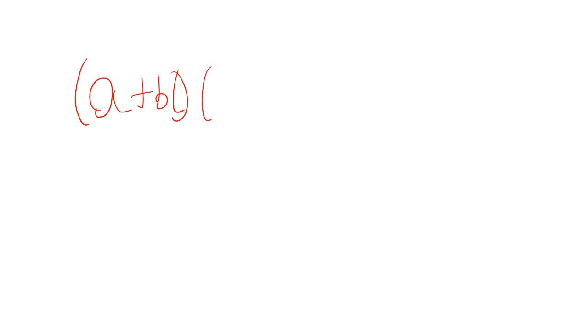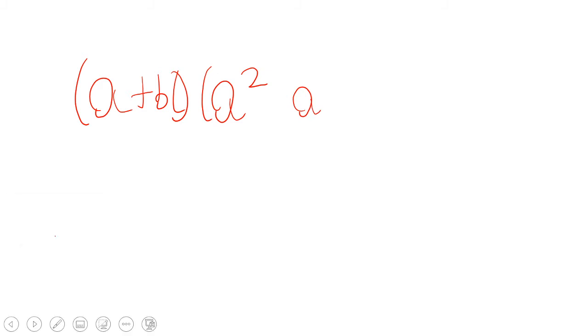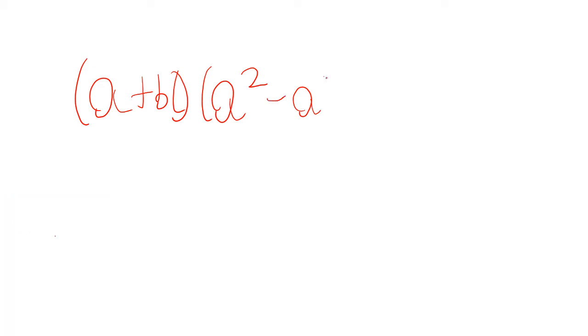Sum of cubes can be factored as a plus b times a squared minus ab plus b squared. You can check this by expanding: we have a cubed minus a squared b plus ab squared, then b times a squared b — these cancel — and it simplifies until you have a cubed plus b cubed.